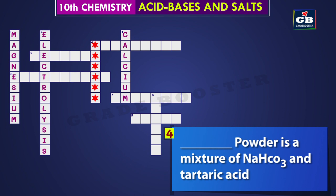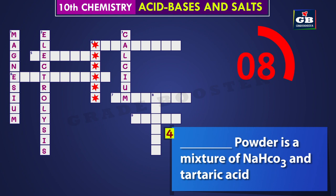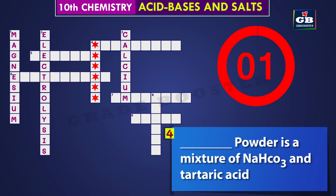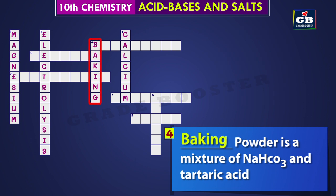Let's see the next one — four. Dash powder is a mixture of NaHCO₃ and tartaric acid. What is that powder? The answer is baking. Baking powder is a mixture of NaHCO₃ and tartaric acid.